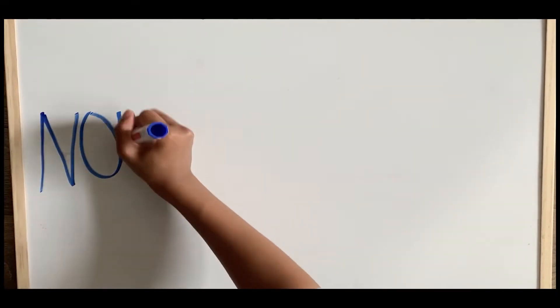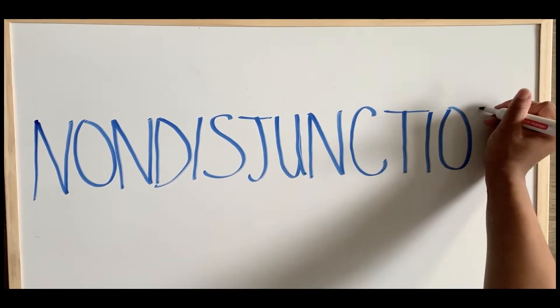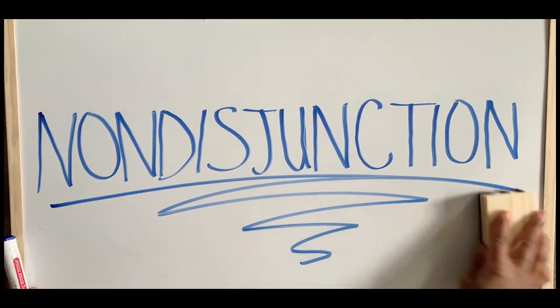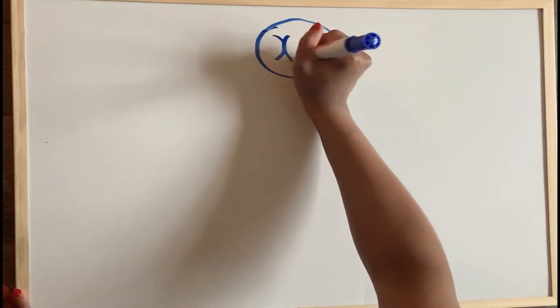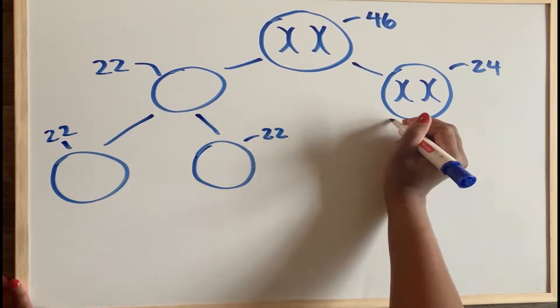This is known as non-disjunction, the failure of chromosomes to separate during either step of meiosis. Failure of chromosomes to separate in the first step of meiosis results in all of the gametes being abnormal, as seen here.